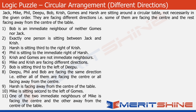The first step is to make a circular structure with 8 positions to place people. In a question like this, you want to proceed with some concrete statements. Since people are facing different directions, the first person you place should have a definite direction. Statement 9 tells us that Harsh is facing away from the centre of the table, so let's put Harsh anywhere in the structure. Now look at statement 4: Phil is sitting to the immediate right of Harsh, so that's the position of Phil.